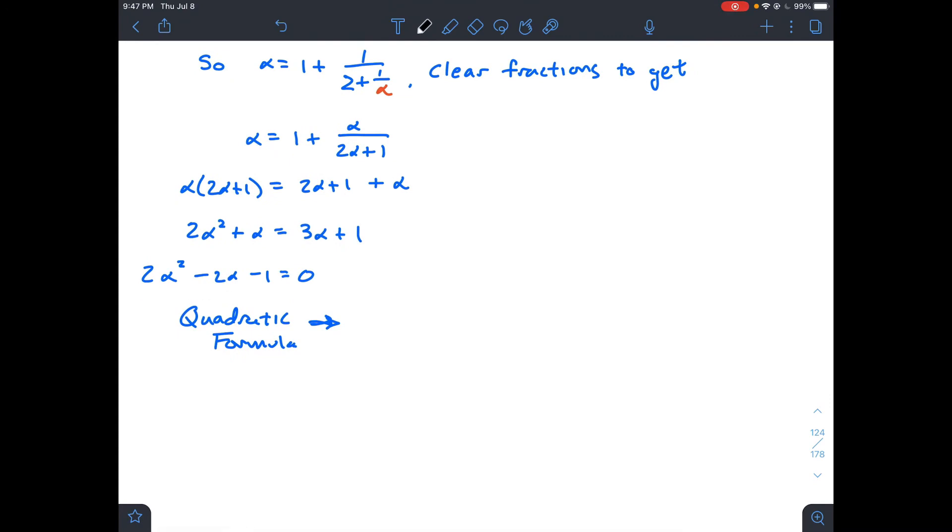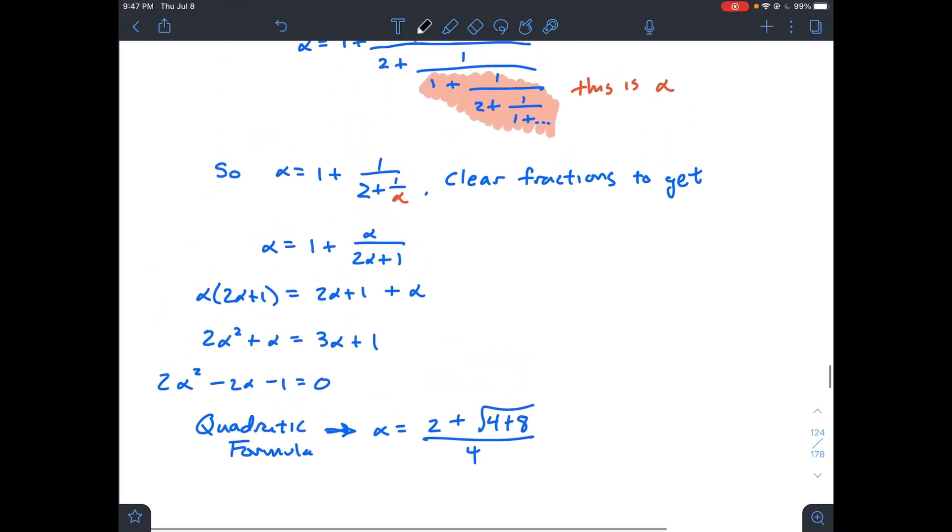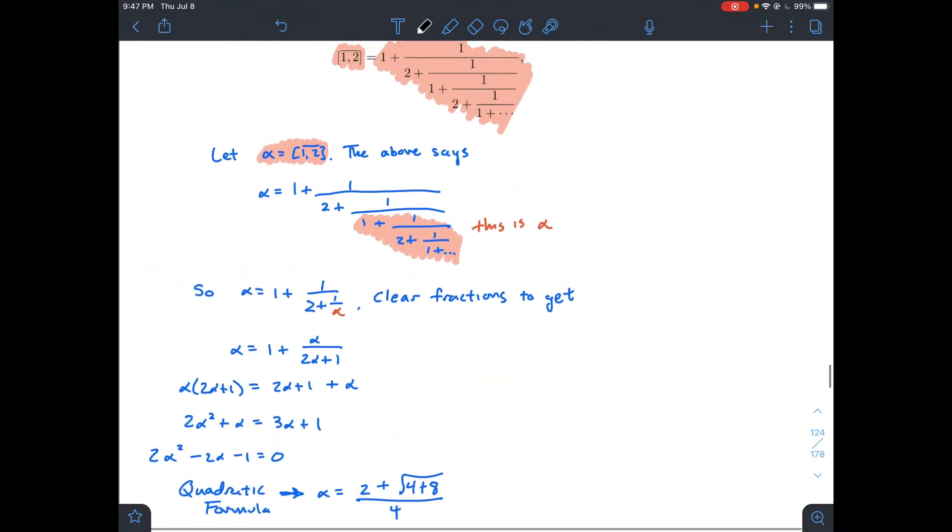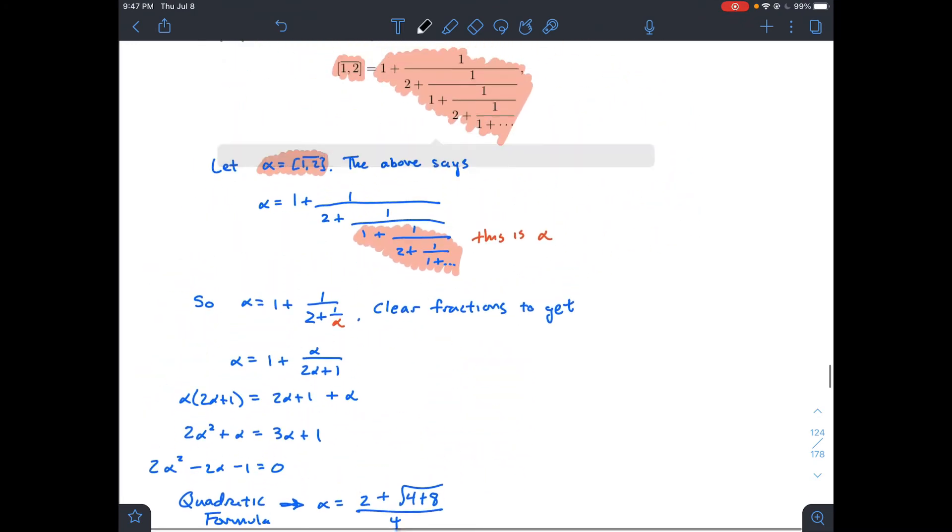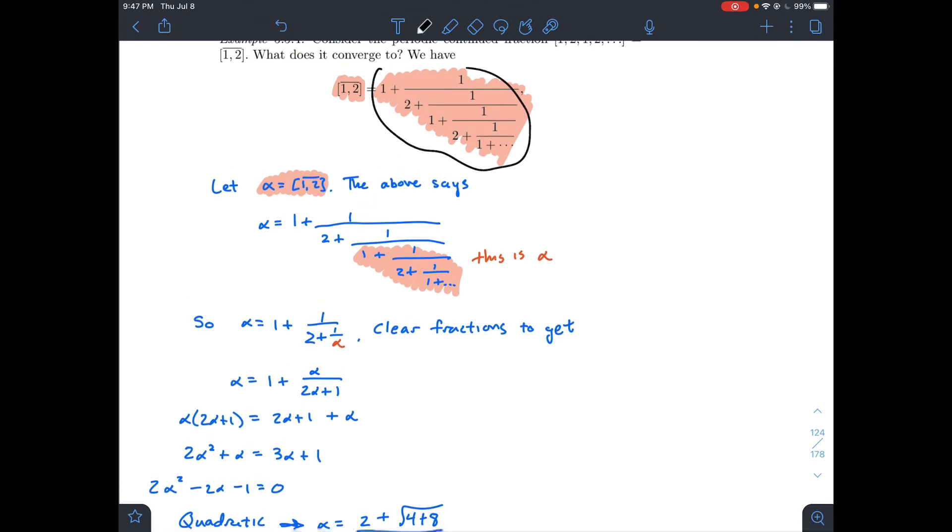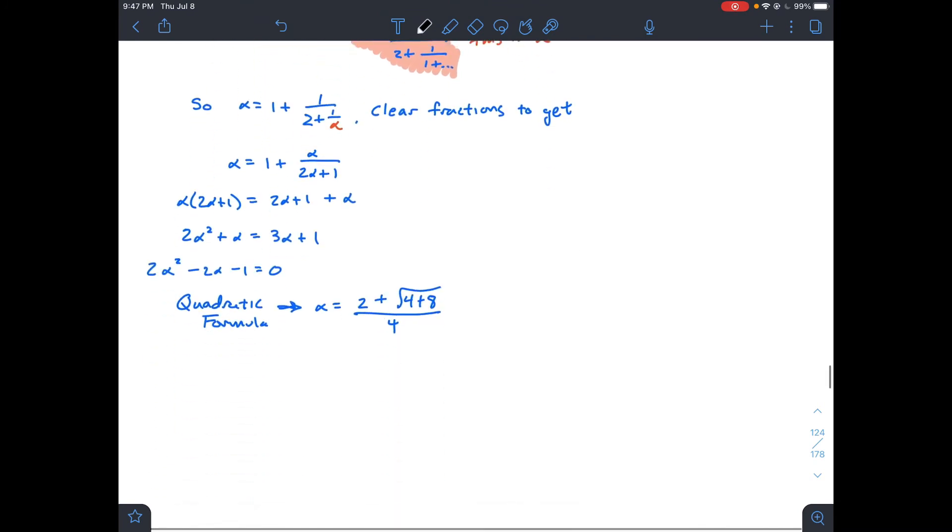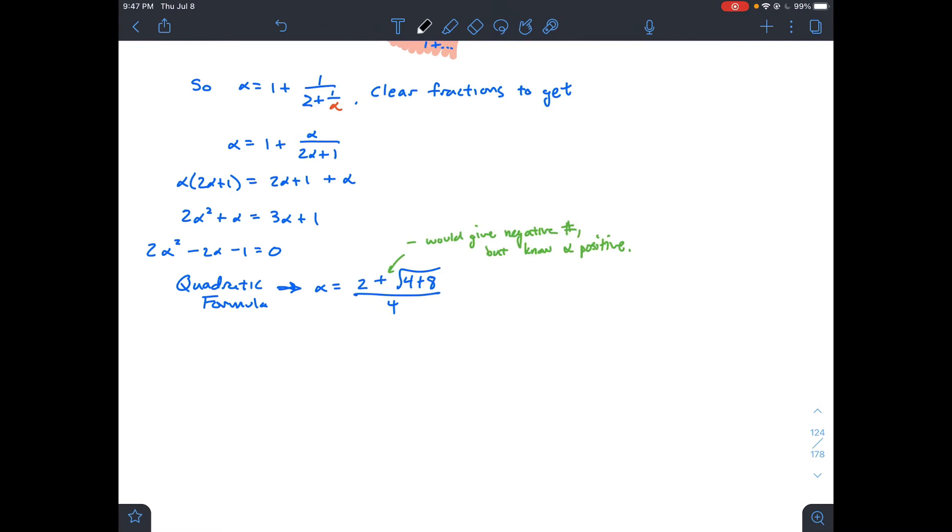I'm going to apply the quadratic formula to this quadratic equation in alpha. This is cool because the whole point is to find what alpha is, and the quadratic formula will tell me. I do x equals negative b plus or minus square root b squared minus 4ac all over 2a. I apply that here.